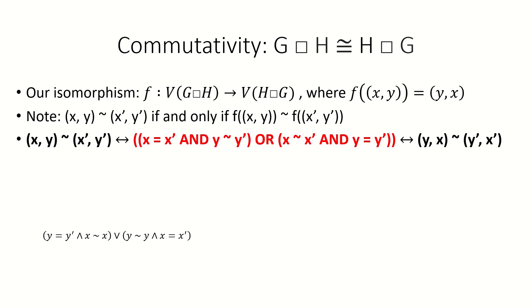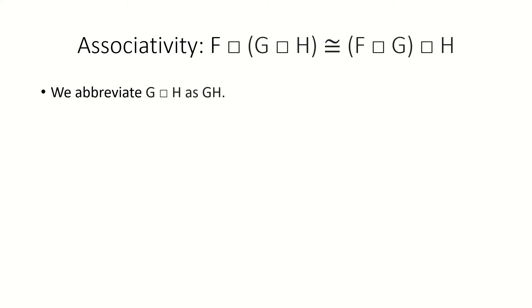Moving on to our second property, the Cartesian product is associative up to isomorphism. For this part of the video, let's write the Cartesian product of two graphs g and h as gh. Now suppose we have three graphs f, g, and h, and the Cartesian products f(gh) and (fg)h. We want to show that f(gh) and (fg)h are isomorphic.